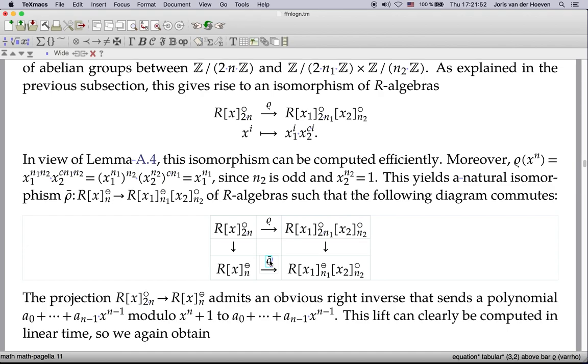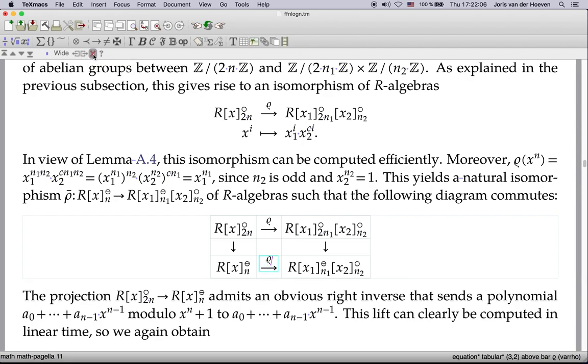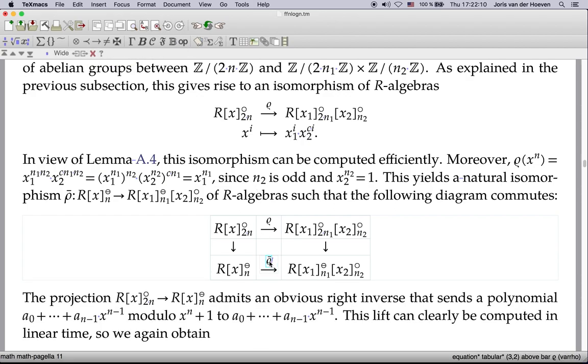The red cross on the focus bar can be used to remove the innermost surrounding tag altogether. For instance we may use it to remove the wide bar above the cursor. Control backspace achieves the same effect.